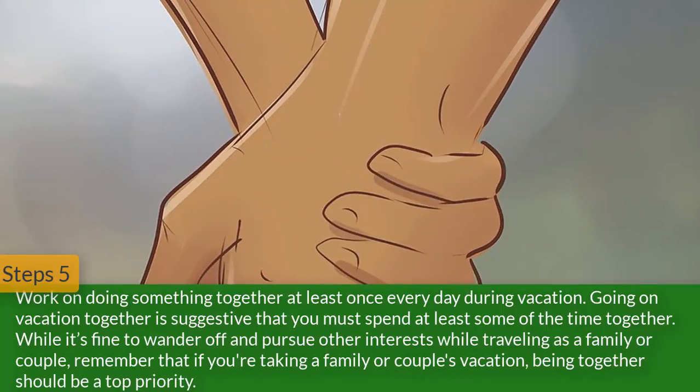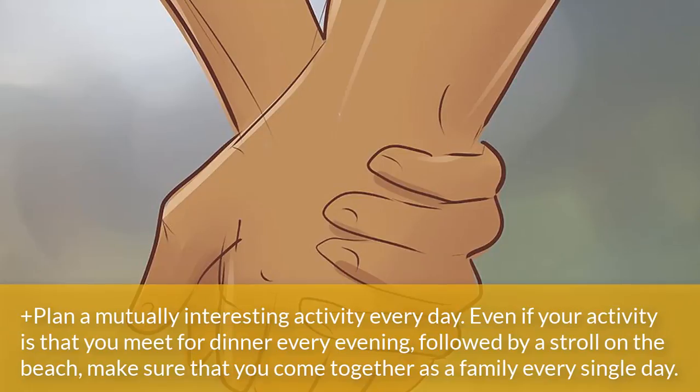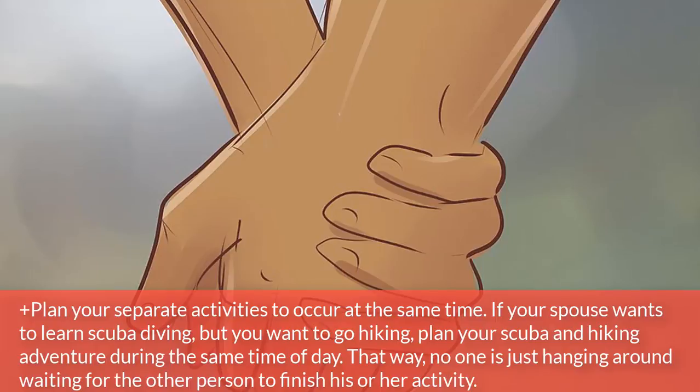Step 5. Work on doing something together at least once every day during vacation. Going on vacation together is suggestive that you must spend at least some of the time together. While it's fine to wander off and pursue other interests while traveling as a family or couple, remember that being together should be a top priority. Plan a mutually interesting activity every day — even if it's just meeting for dinner every evening followed by a stroll on the beach. Plan your separate activities to occur at the same time. If your spouse wants to learn scuba diving but you wanted to go hiking, plan your scuba and hiking adventures during the same time of day so no one is just waiting around for the other person to finish.